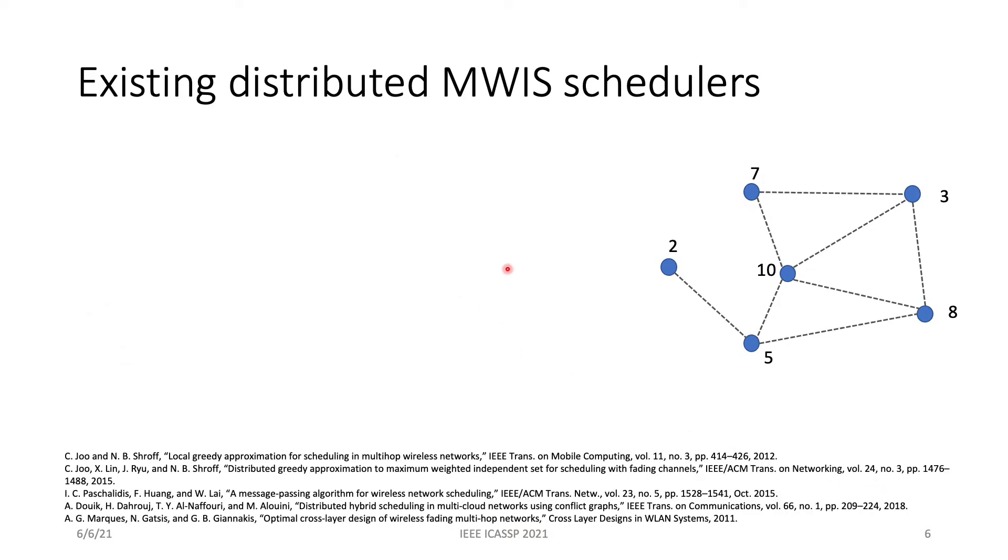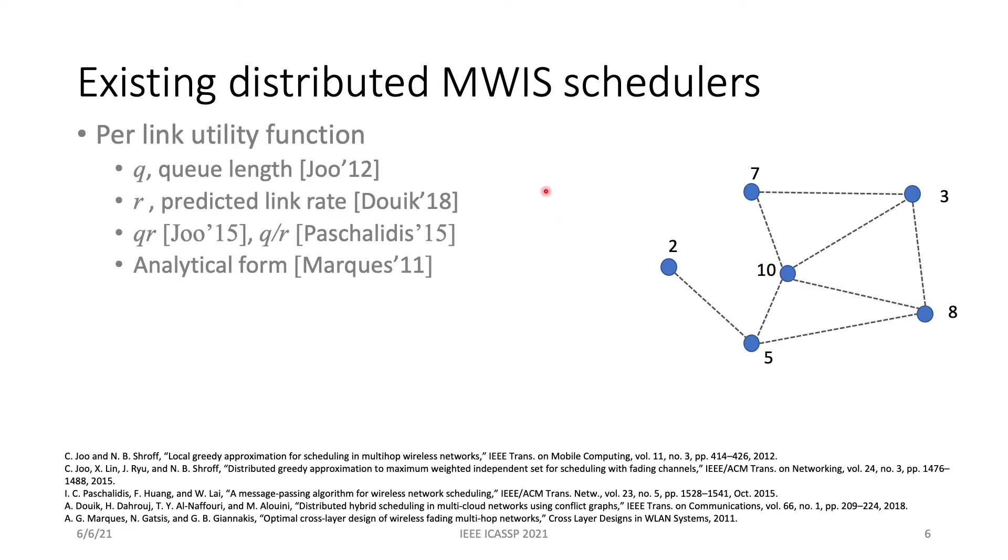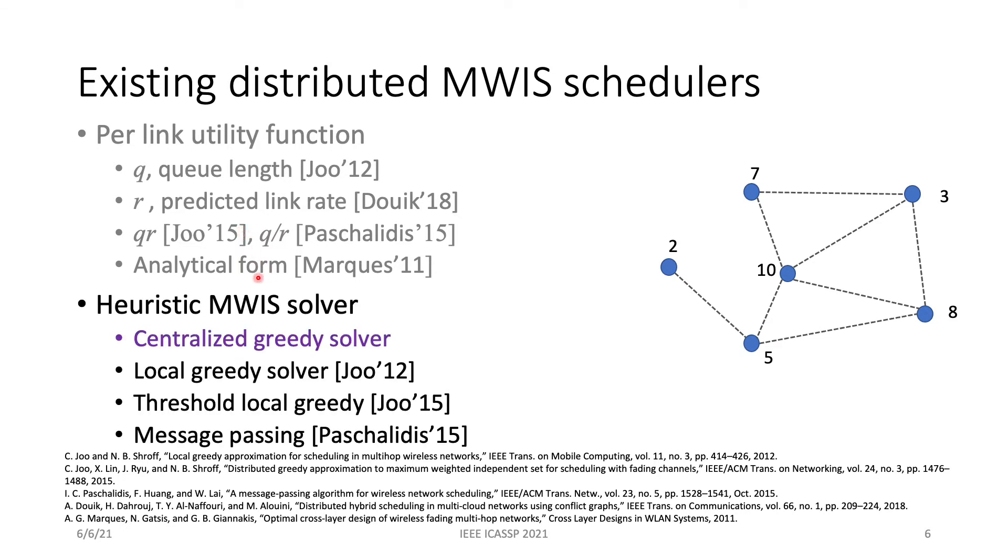Now, let's look at some existing distributed solutions. A scheduler needs to address two relatively independent problems. First, is to find the per-link utility function for its scheduling objective. The second problem is to find the heuristic MWIS solver that solves the MWIS problem. We have given four heuristics from the literature, and I will introduce the local greedy solver in a little bit detail.